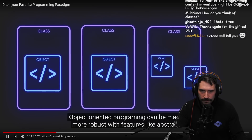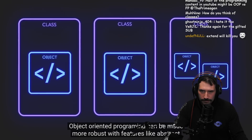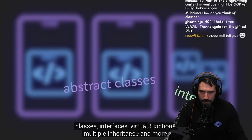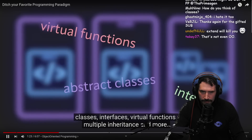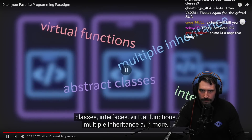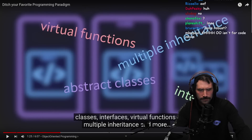Object-oriented programming can be made more robust with features like abstract classes, interfaces, virtual functions, and multiple inheritance. You're not allowed to use the term 'robust' with 'multiple inheritance,' okay? Don't ever say multiple inheritance and robust in the same breath.